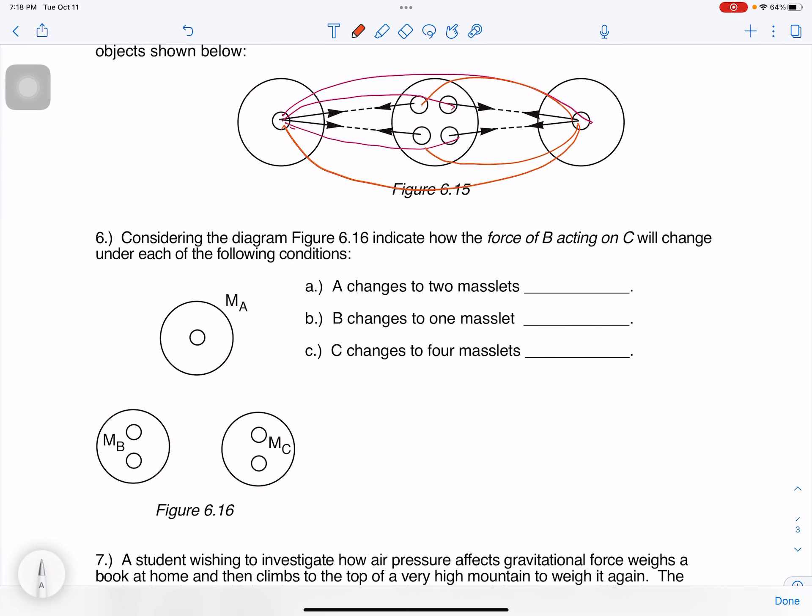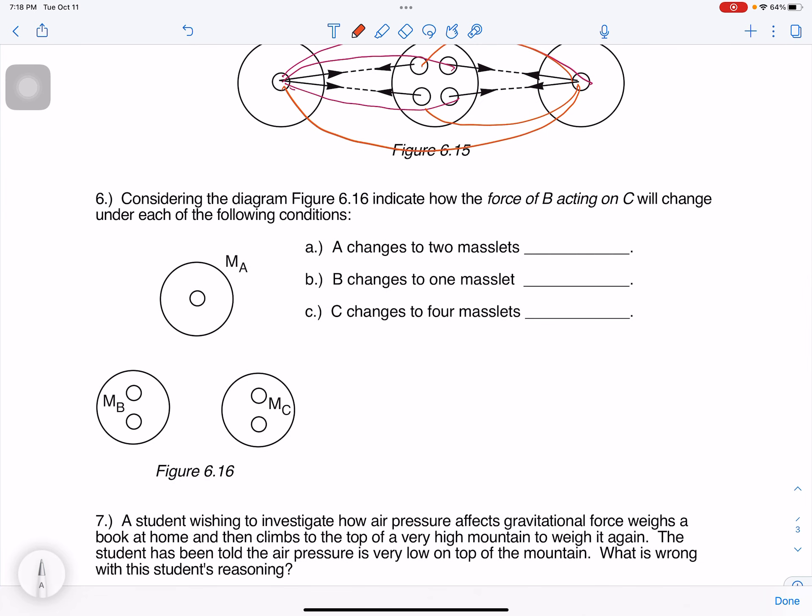Consider the following diagram. The force acting on C will change under each of the following conditions. A changes to two mass slits. No change, because it doesn't affect the force between B and C.